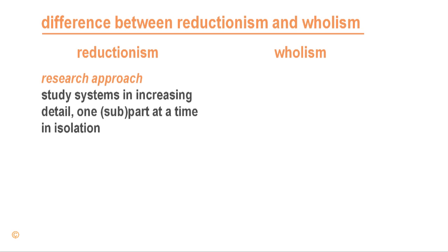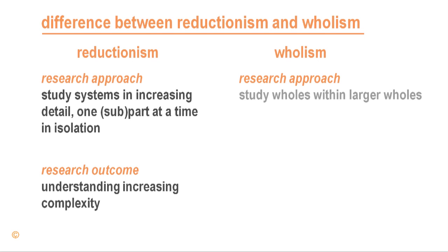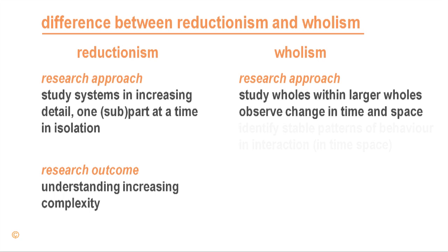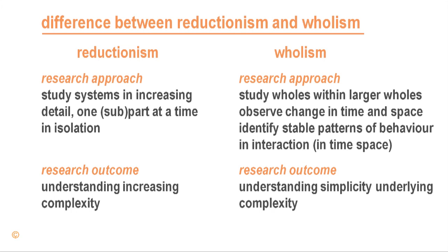The research approaches of reductionism and holism can be summarized as follows. Reductionism studies systems in increasing detail, one part and sub-part at a time, by observing the behavior of that part using a few variables in isolation from numerous other variables and factors that interact and impact on the part. This leads to an increasing understanding of complexity in ever greater detail. The research approach of holism is to study wholes in interaction with their environment — that is, to study wholes within larger wholes — and to observe the change of that interaction in time and space, identifying stable patterns of behavior. The research outcome is to understand the simplicity that underlies the complexity.